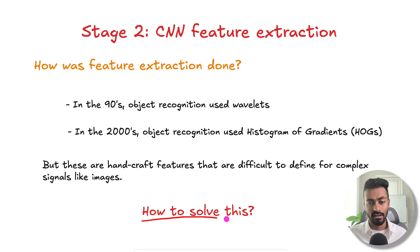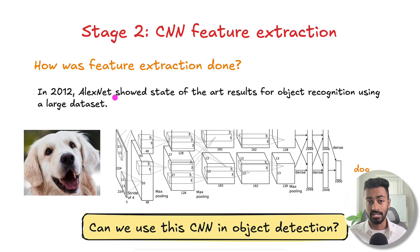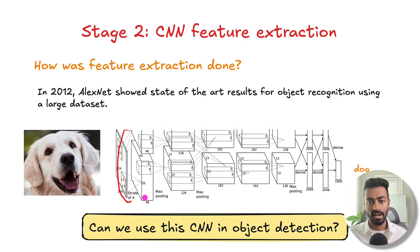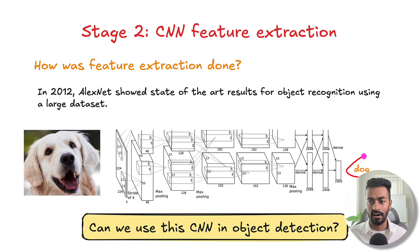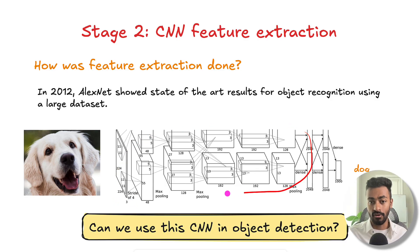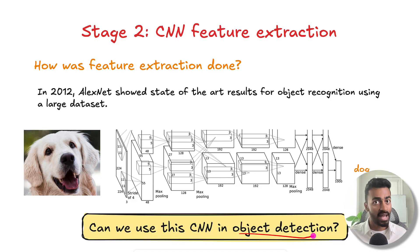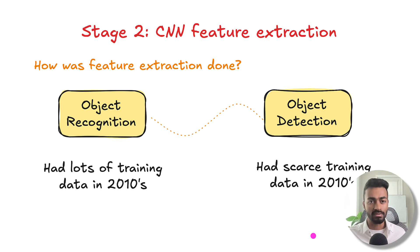In 2012, AlexNet showed state-of-the-art results for object recognition using a large dataset. Object recognition is the problem of taking an input image and determining what the entirety of the image contains — a dog, or something else. This neural network showed state-of-the-art performance, raising the question: can we use this CNN somehow in object detection? The answer lies in linking object recognition to the problem of object detection.